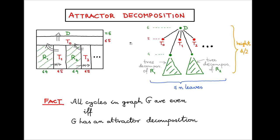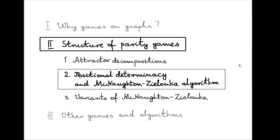If we remove all nodes corresponding to empty sets from the decomposition — only the red nodes can sometimes be empty — then the tree of the decomposition has at most as many leaves as vertices in the graph. Moreover, the height of the tree is dictated by the highest possible priority: if d is the number of distinct priorities, such a decomposition has height roughly d/2.